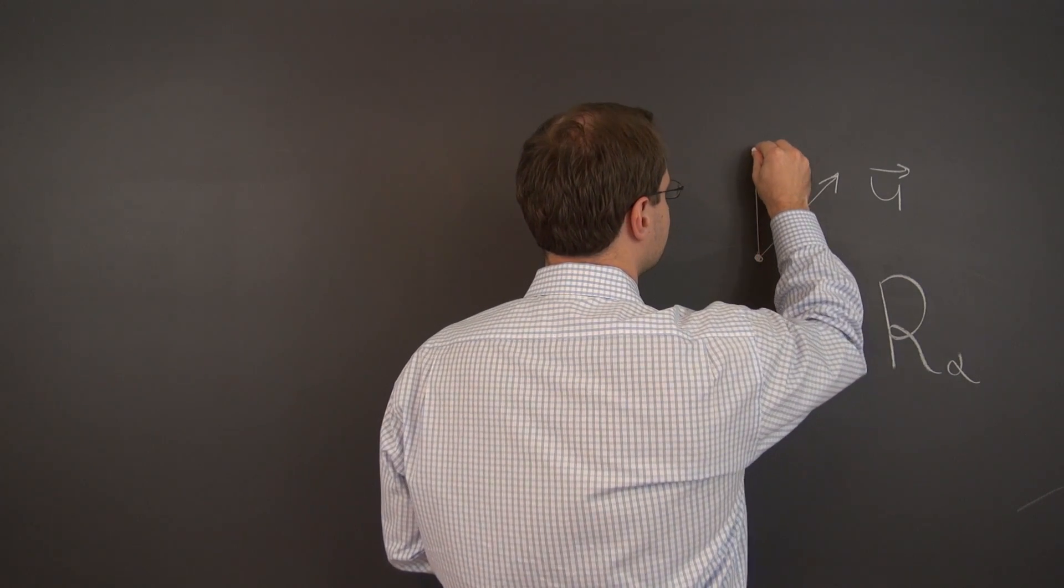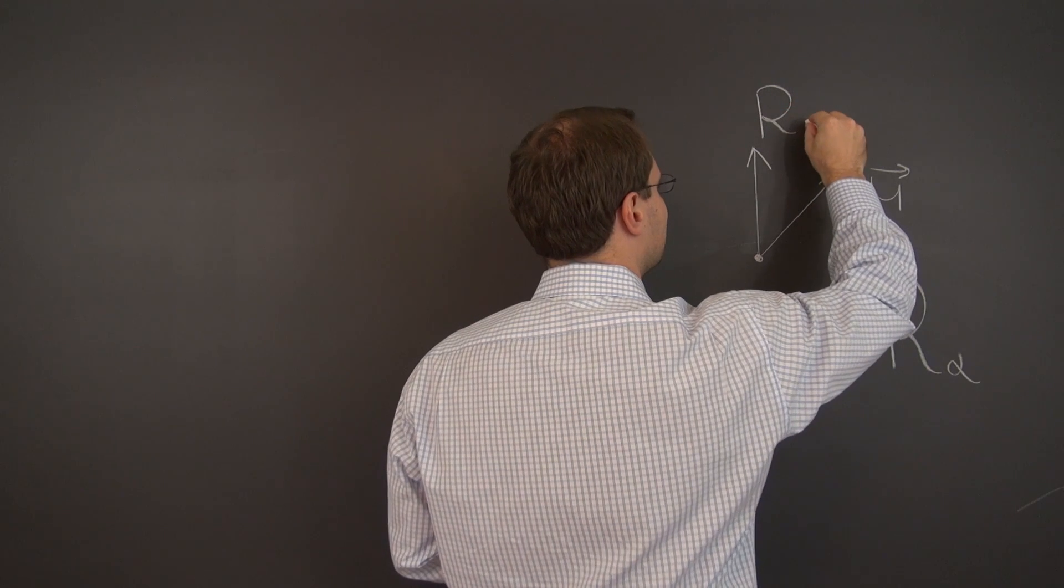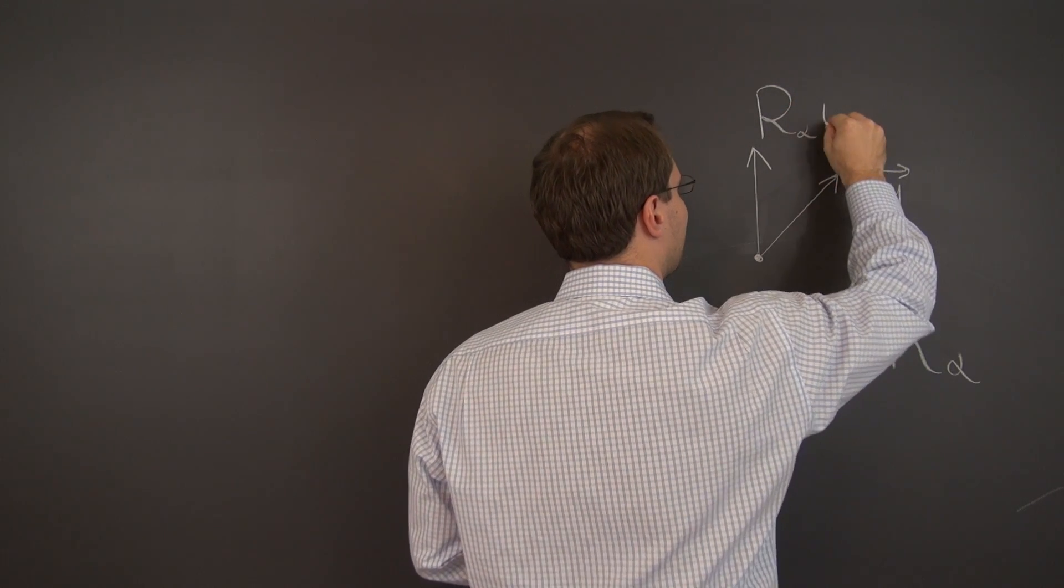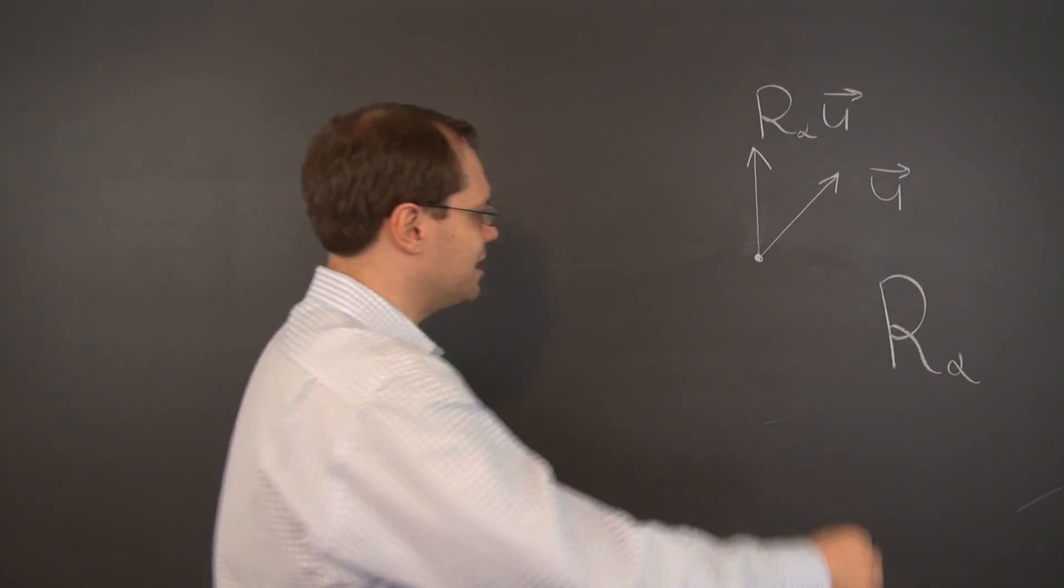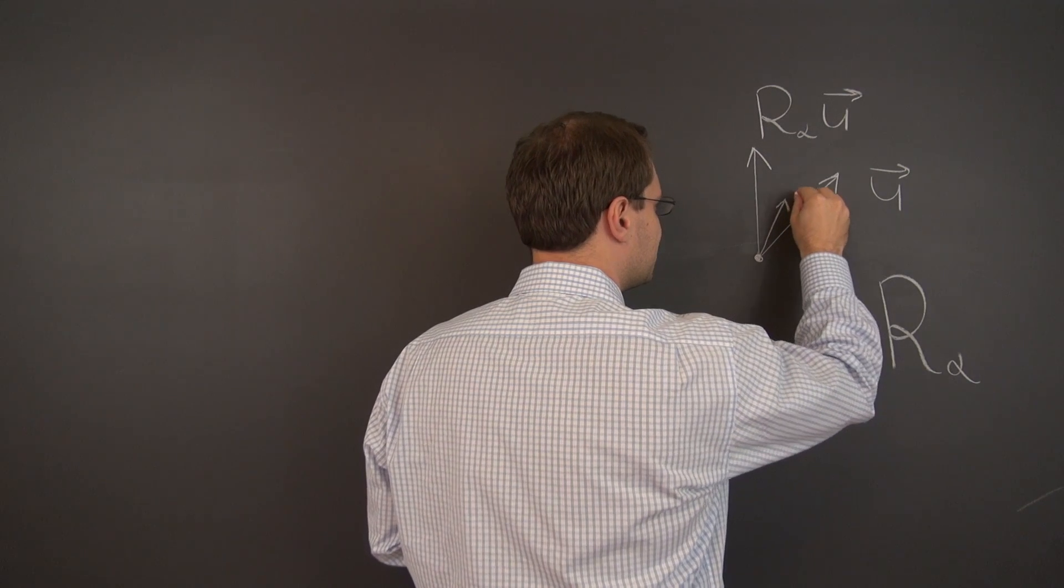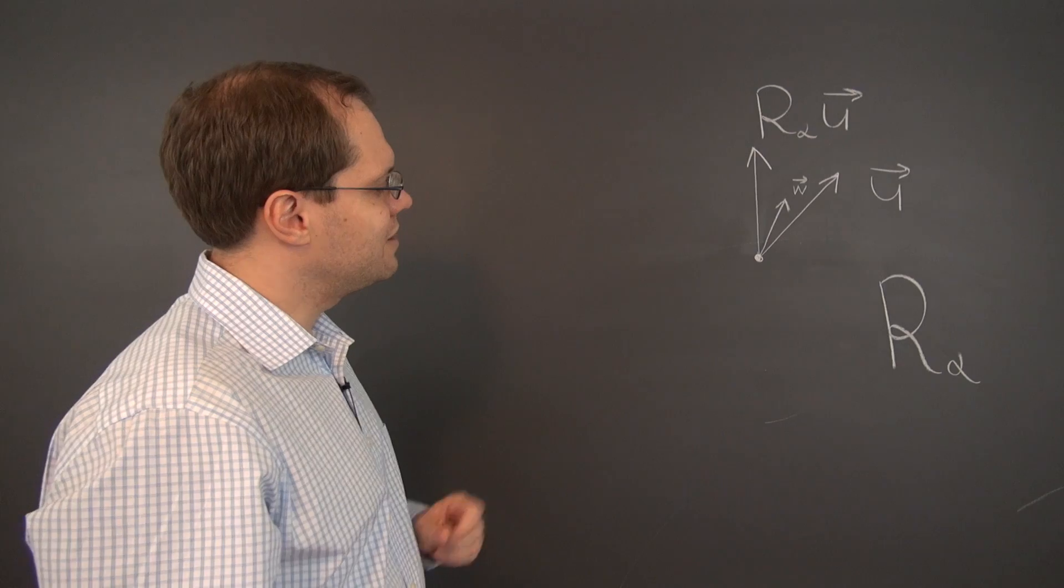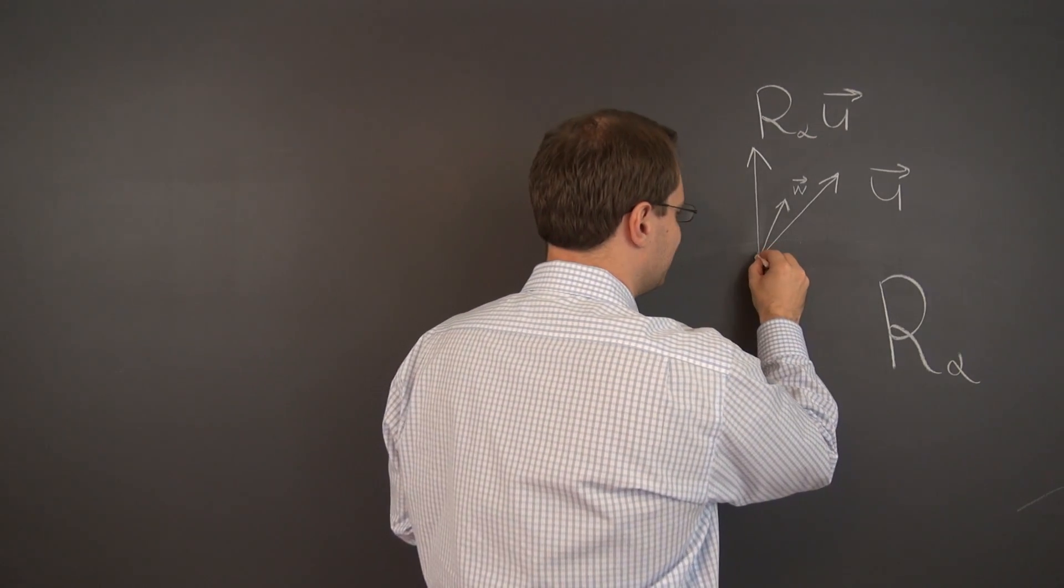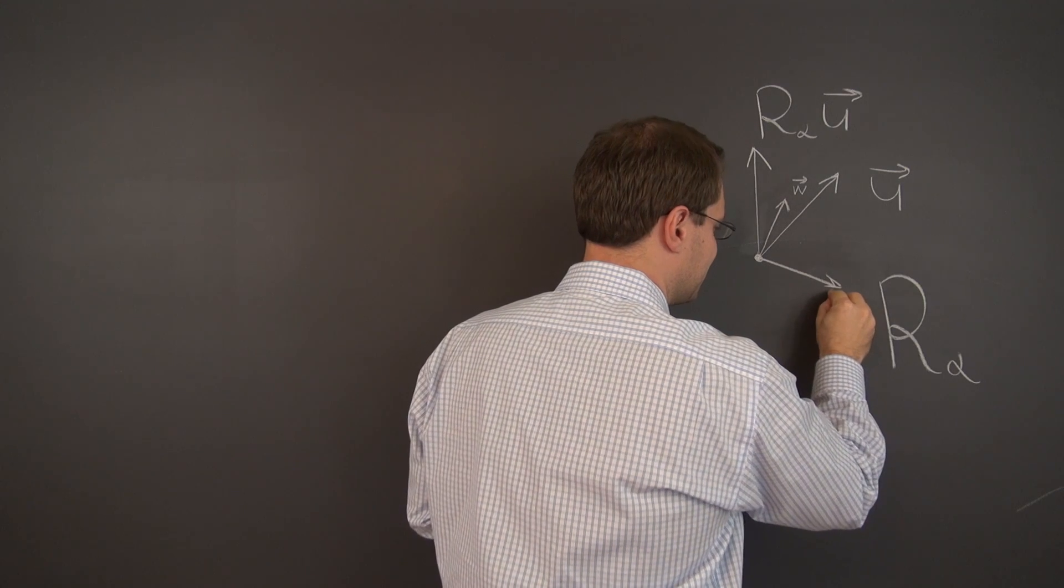The rotation keeps the vector's length but rotates it. So this is the image of u, written as r sub alpha of u. Let's consider one more example. We'll consider this vector to avoid the mess.